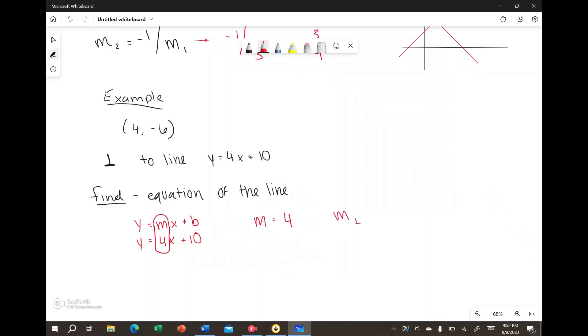So the slope perpendicular to that would be negative 1 over 4. And the equation of the line is in the form of y equals mx plus b, so m being negative 1 over 4.